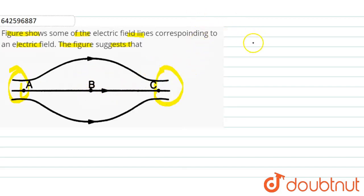So we can say that the electric field at A and the electric field at C are equal.